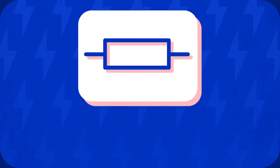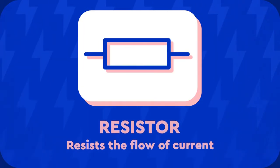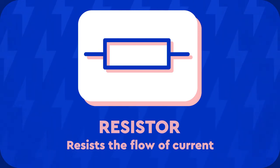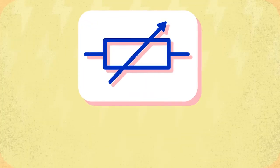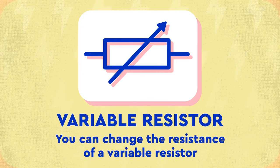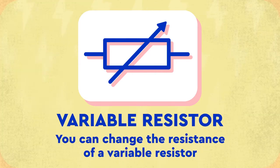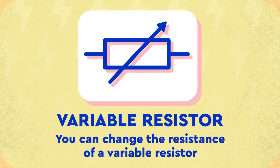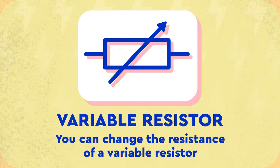A fixed resistor is used to resist the flow of current. The resistance of a fixed resistor is always the same. This is a variable resistor. You can change the resistance of a variable resistor, allowing you to change the current in a circuit.